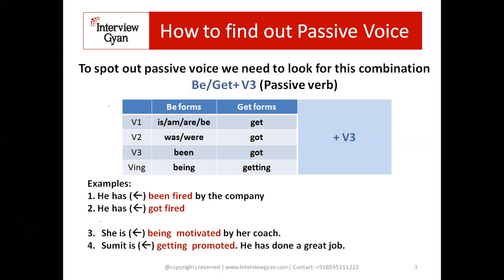The best practice is to start reading newspapers and underline the sentences where you find be-form plus third form, or get-form plus third form. After some time you will be able to spot passive voice very quickly. Newspaper articles have many passive sentences, and earlier when you were reading them you may not have realized passive voice had appeared — which is why sometimes the meaning wasn't clear. So practice underlining these combinations: be-form plus V3, or get-form plus V3. Also fix the forms: is, am, are, was, were, being, been — and get, got, got, getting.